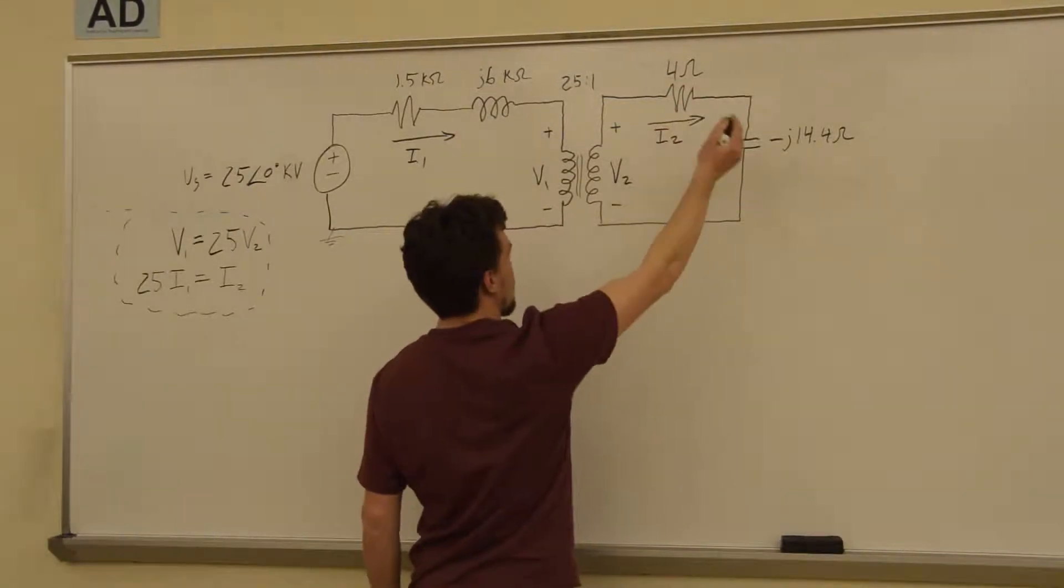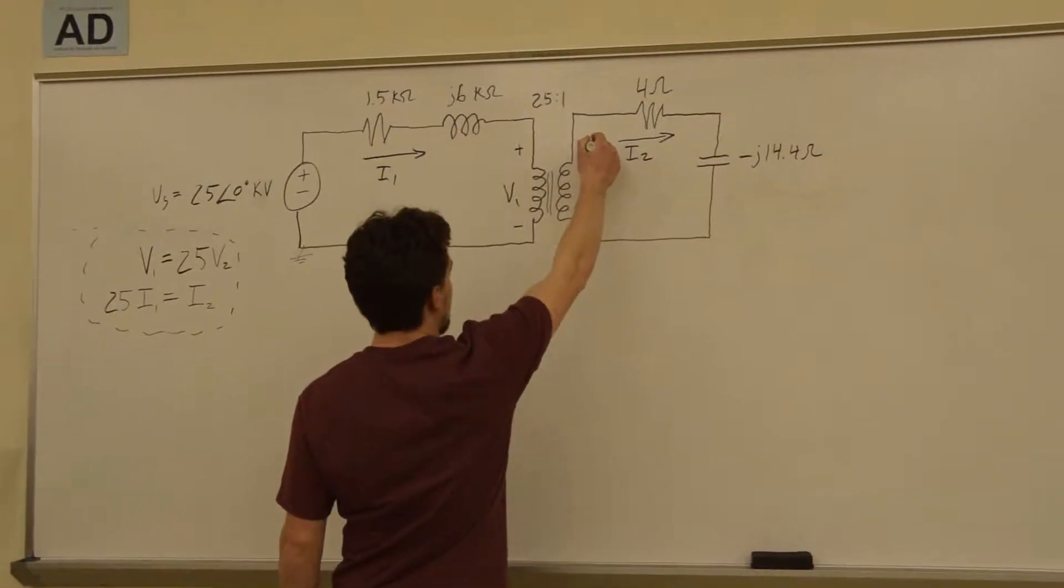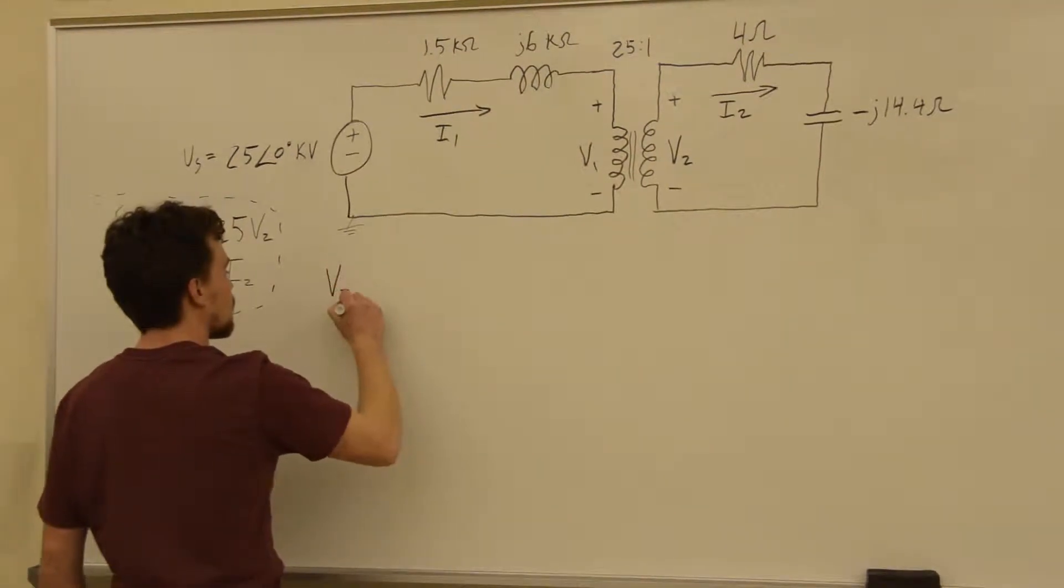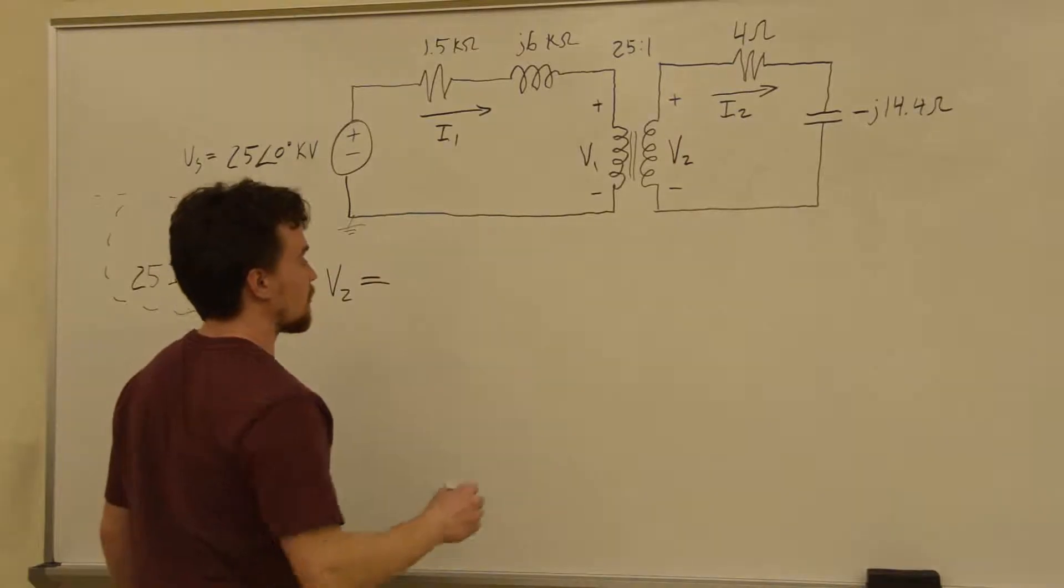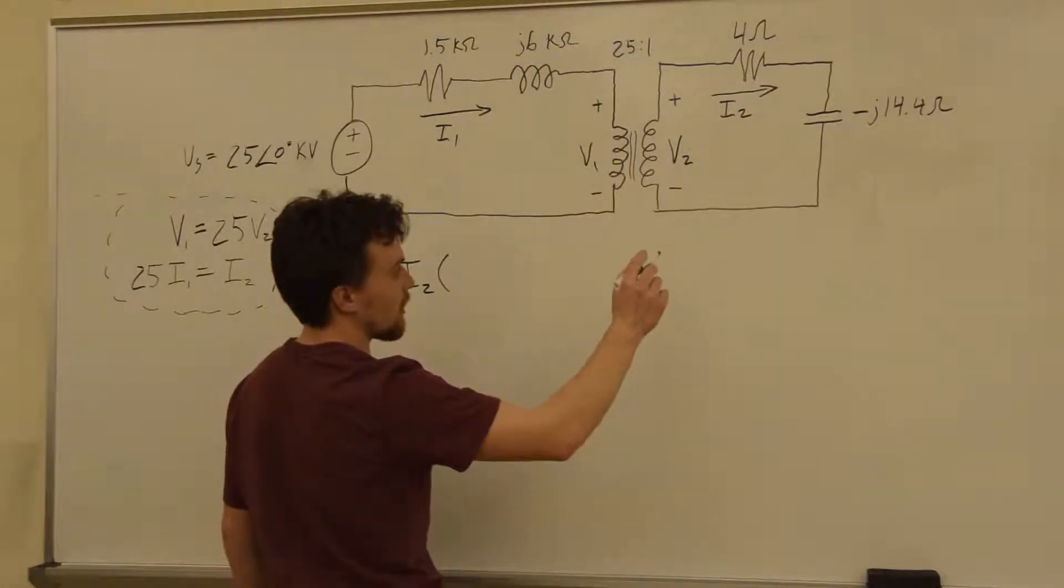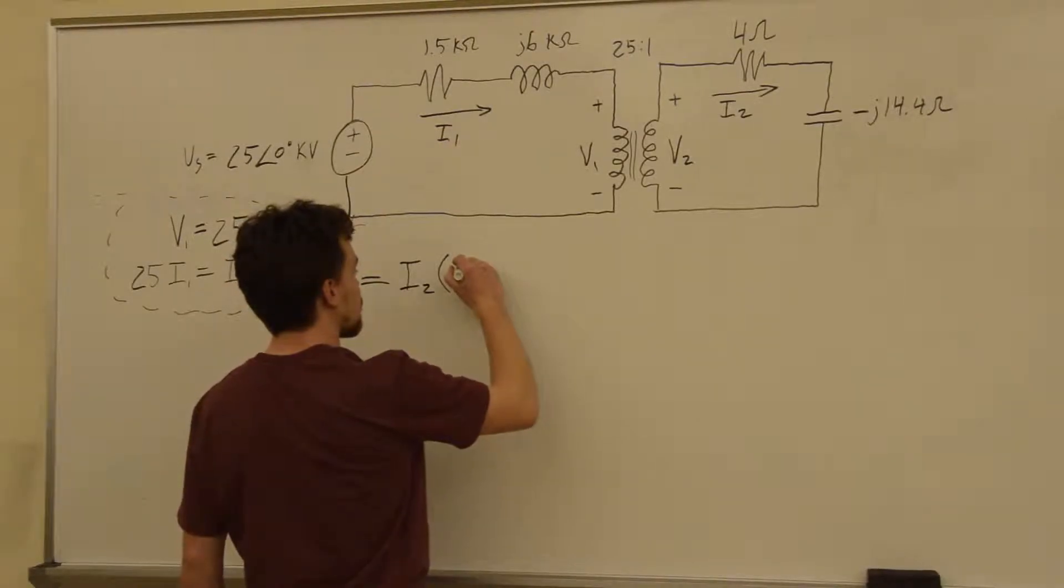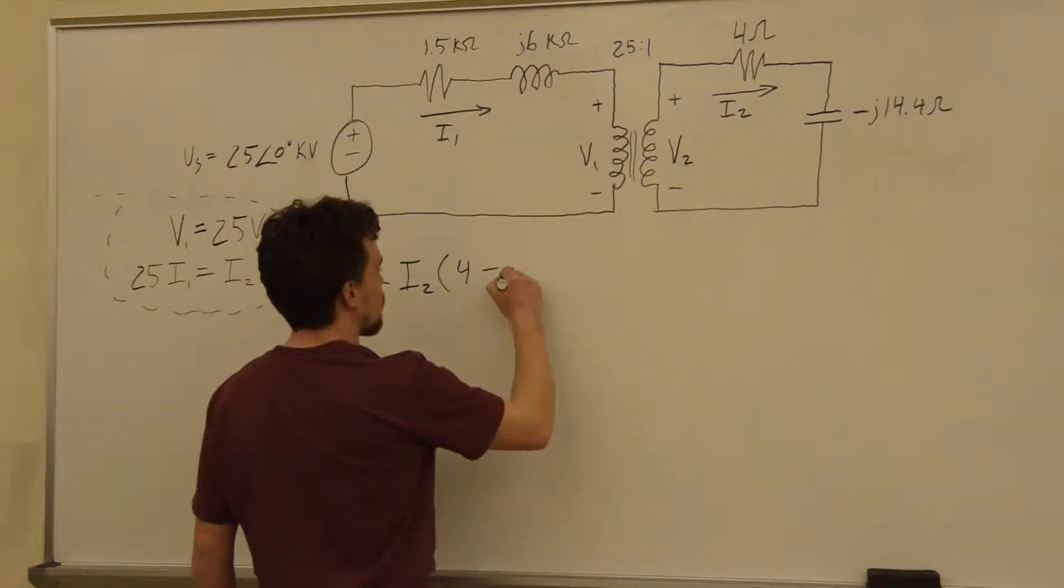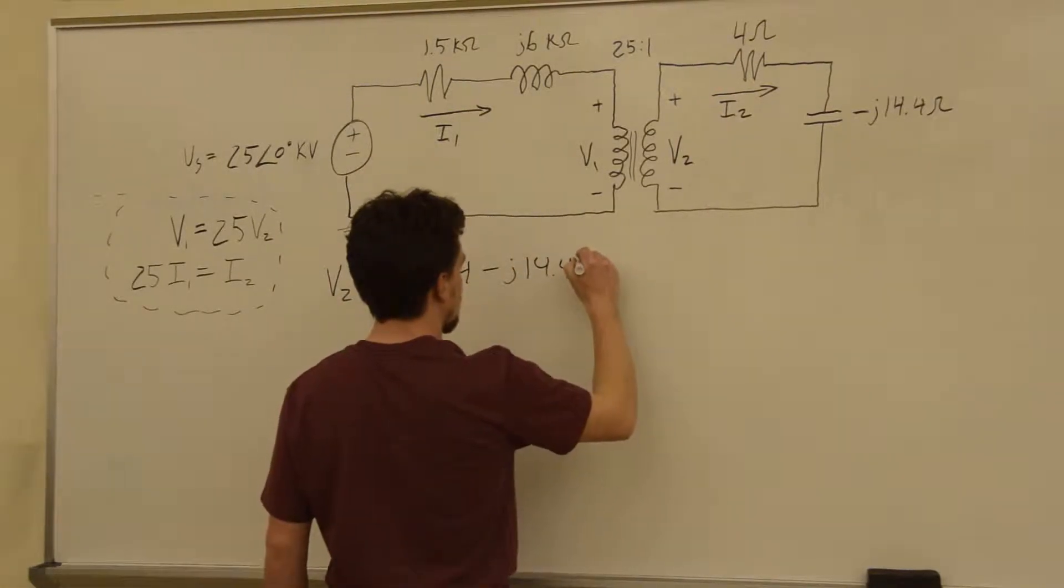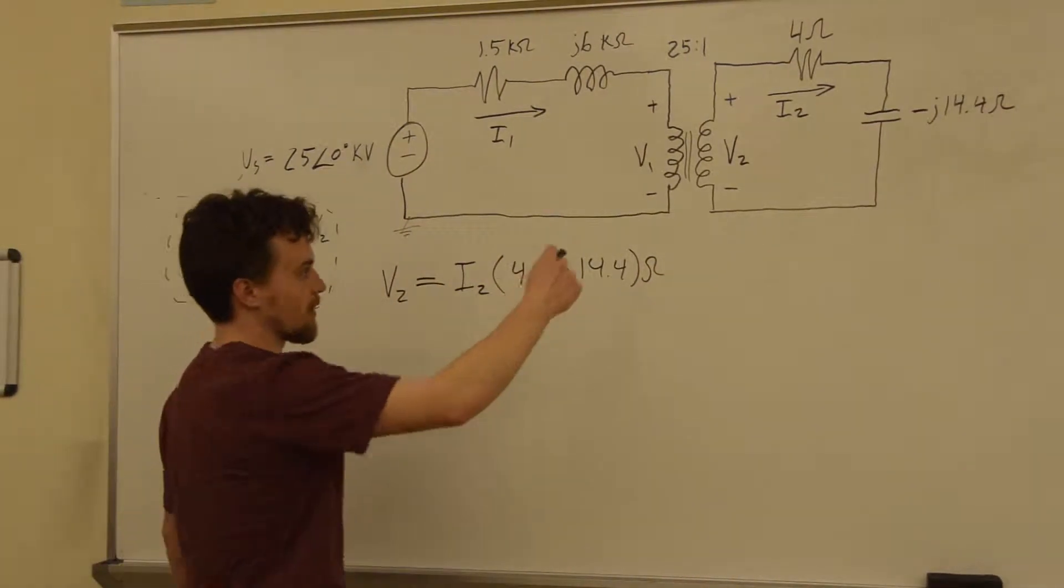So if you go around this loop, you can get the voltage drops using I2. We'll say the V2 will be equal to I2 times, we've got 4 ohms, and we have negative J 14.4 ohms. So that's just from KVL around that loop.